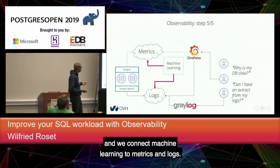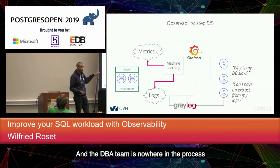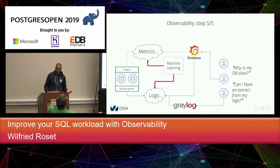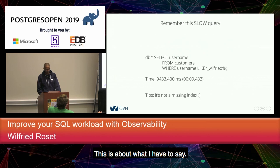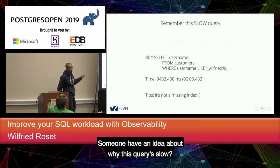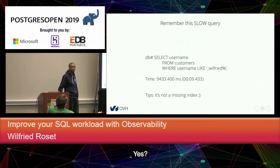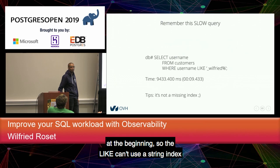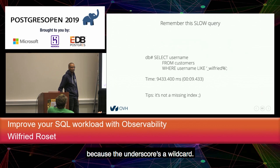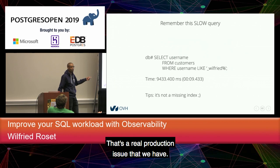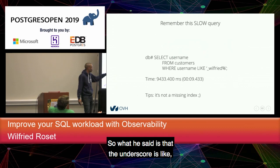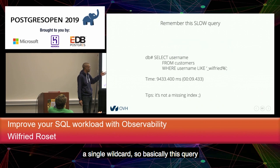The DBA team is no longer in the process because our developers are now autonomous. So — does anyone have an idea about why this query is slow? The answer: there's an underscore at the beginning, so the LIKE can't use the B-tree index because the underscore is a single-character wildcard. This means the query has to scan the whole table to find the answer. That's a real production issue that we have.